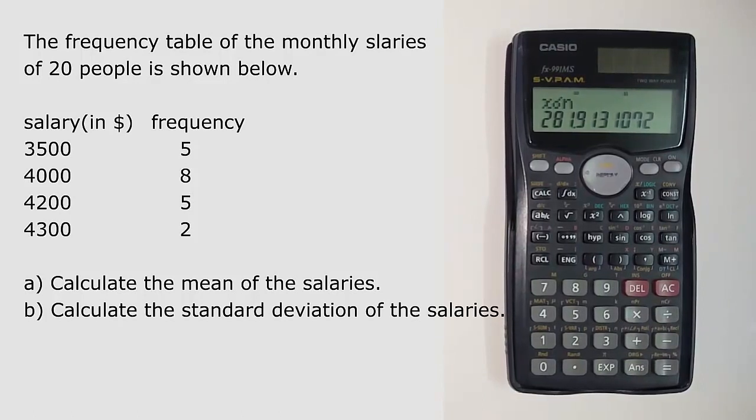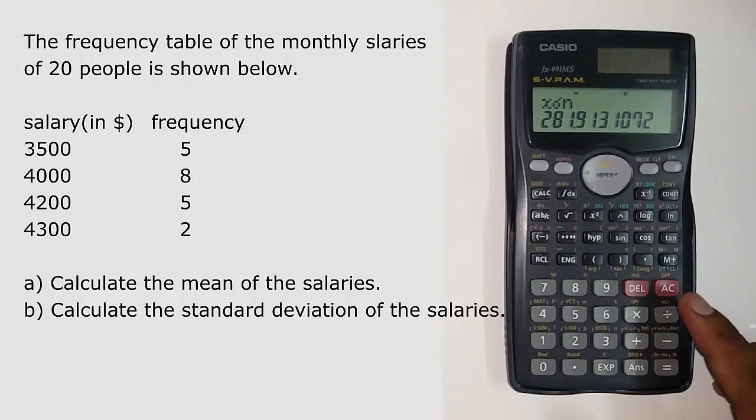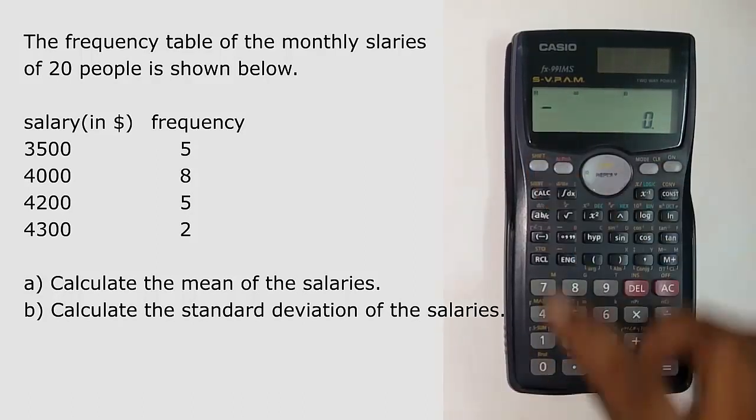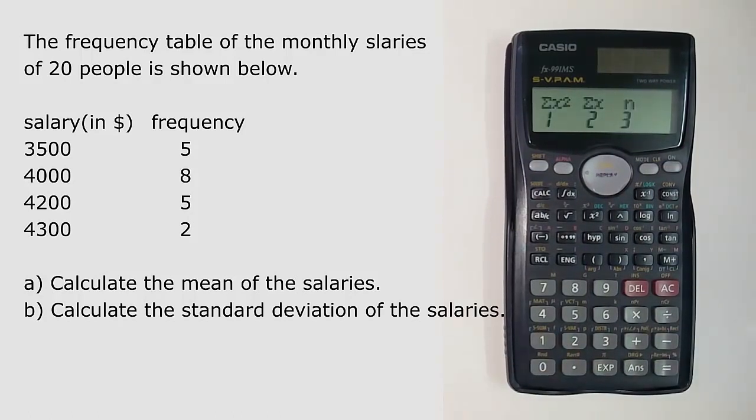Now you might want to calculate other values such as summation of x, summation of the frequency, summation of x squared. So guess what? Even these values can be found by simply using your calc. Click the shift button plus number 1 option. Now this gives you a new menu. Here the summation x squared denotes the value for summation x squared. So if you want to see summation x squared, click on the number 1 button.